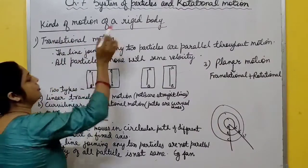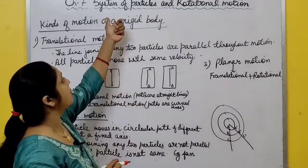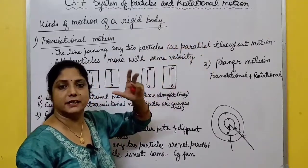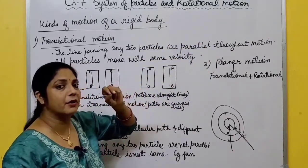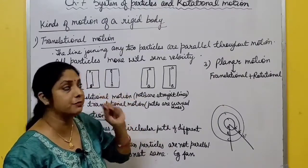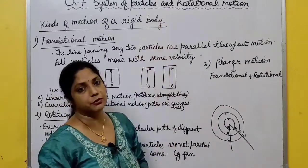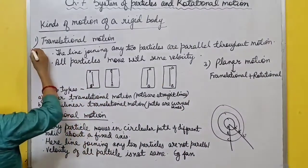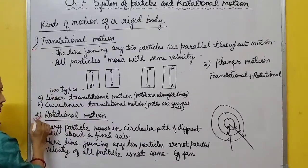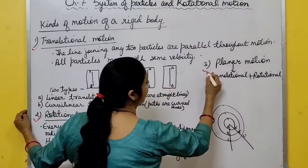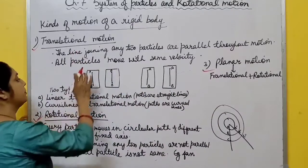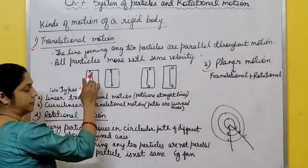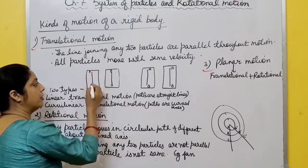Kinds of motion of a rigid body: the chapter name is System of Particles and Rotational Motion. We study about an idealized extended body - a rigid body - and their rotational motion. But there are other types of motion also. First is translational motion, second is rotational motion, third is planar motion. What is translational motion? Suppose this is a body with two particles A and B.